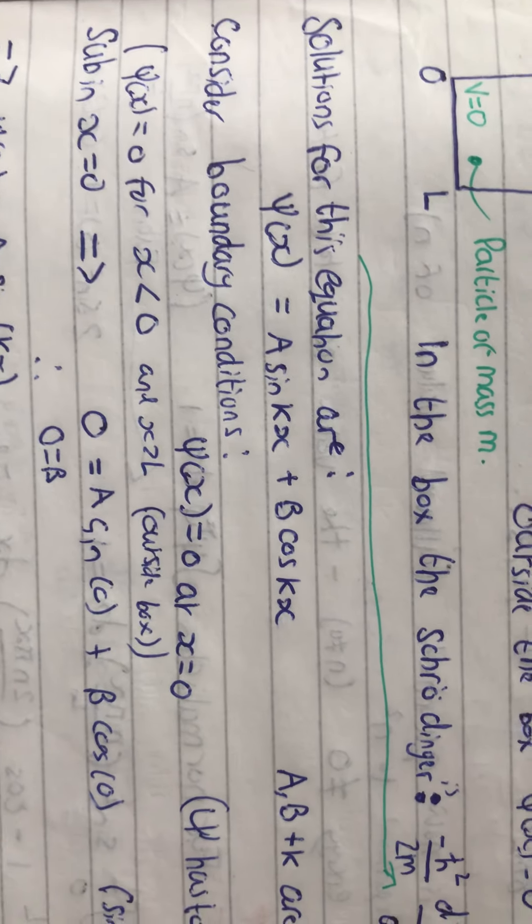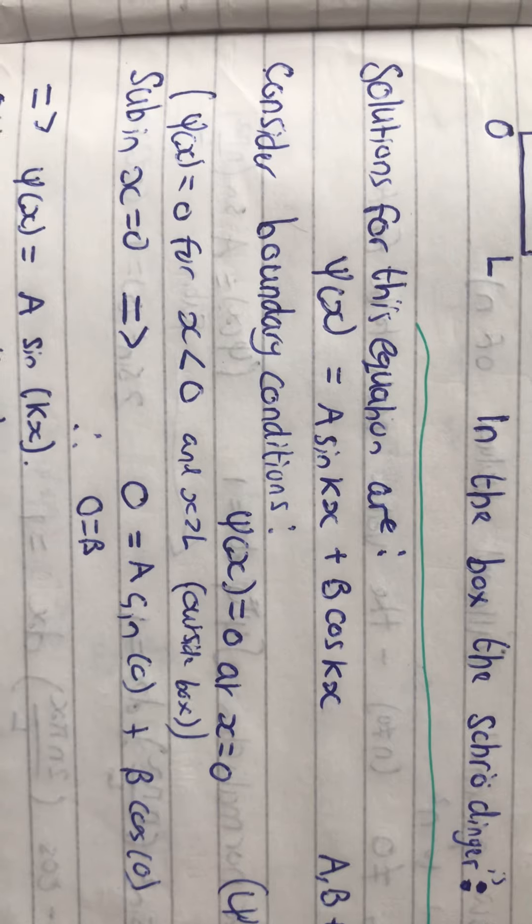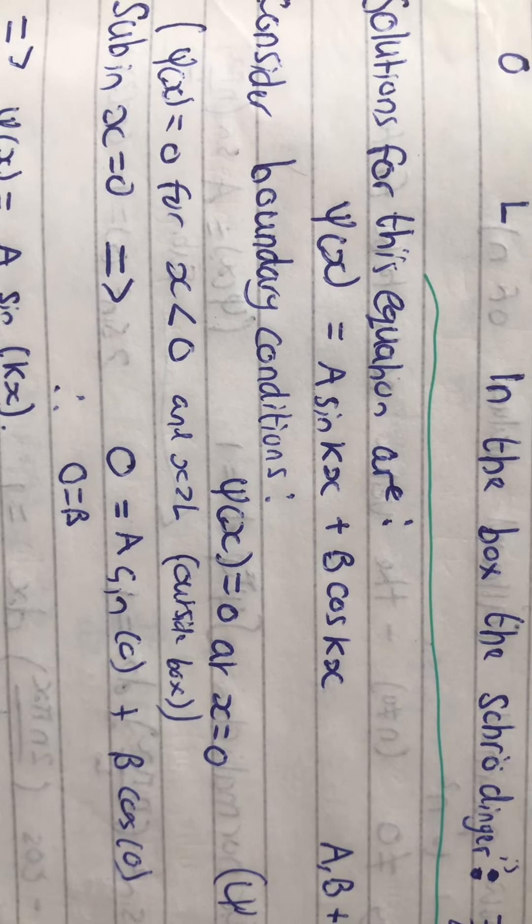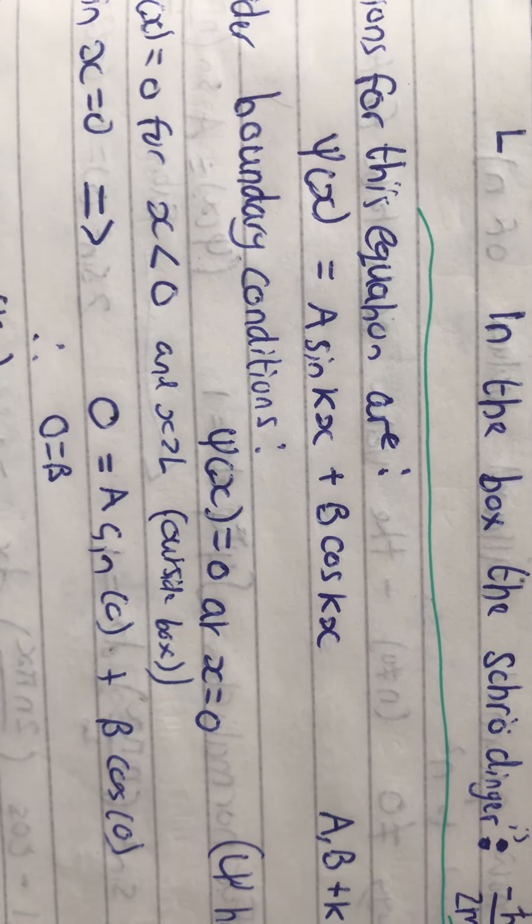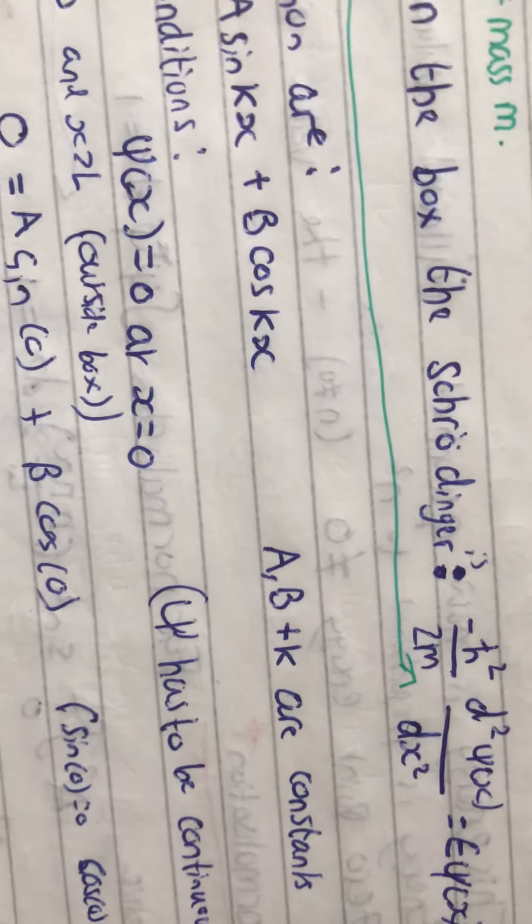So, solutions for this Schrödinger equation are that the wave function can either be sin(kx) or a sin(kx) plus cos(kx). Cos(kx), well,